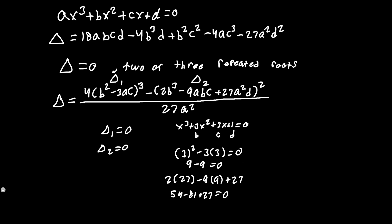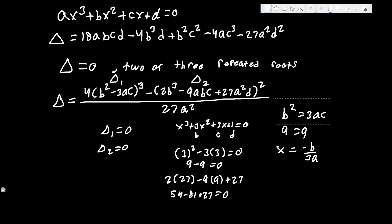To confirm a cubic has a repeated root, we check if b² = 3ac. Here 9 = 9, confirming a triple root. This means x = -b/(3a) gives us all three equal solutions.